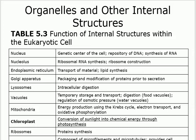The endoplasmic reticulum has two types: rough and smooth. The rough endoplasmic reticulum has ribosomes on its surface, while the smooth one does not. The smooth ER is used to make lipids, and both types are involved in transport.